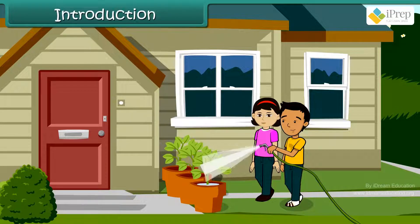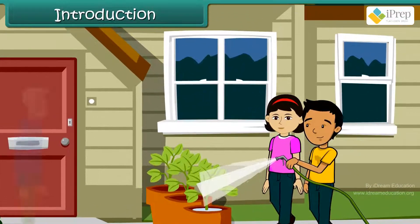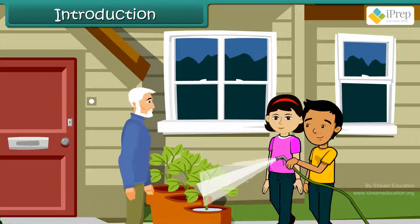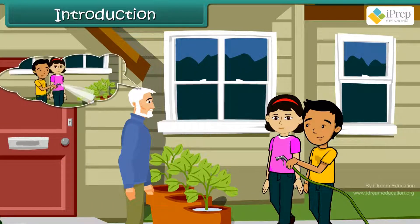Gopal and Gita were watering the plants using a hose. On seeing this, their grandfather came running to stop them. He advised them not to use a hose pipe so that the precious water was not wasted.